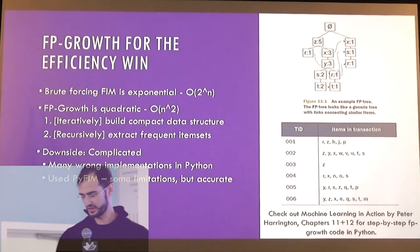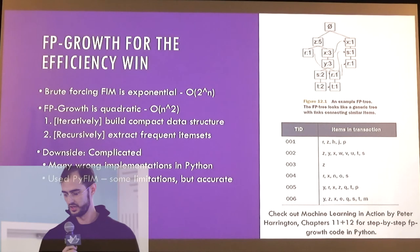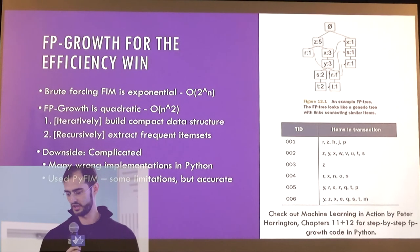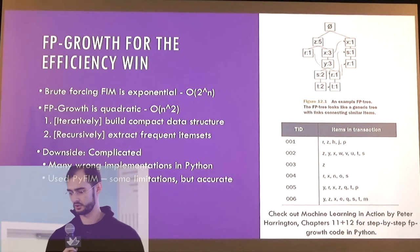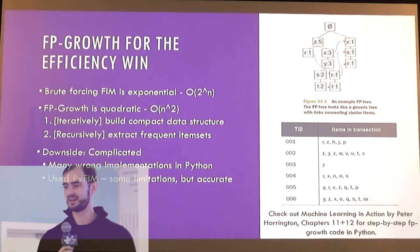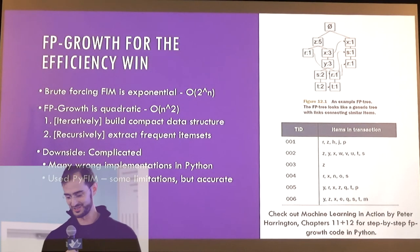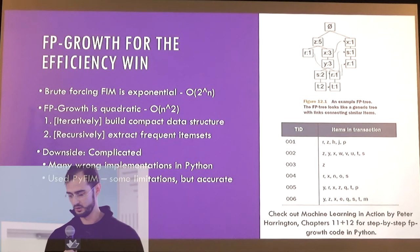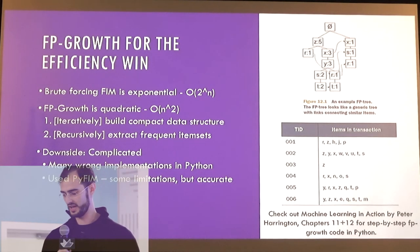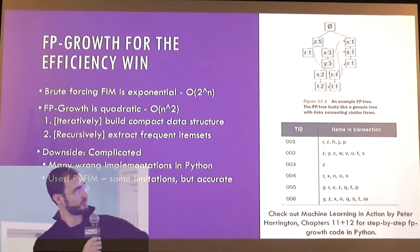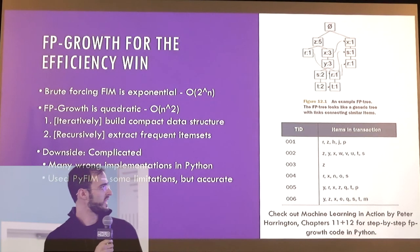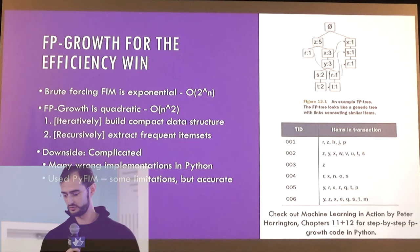Within that, I used a specific algorithm called FP Growth, because frequent item set mining is actually a very complex problem. If you try to brute force it, mathematically it creates a power set that's exponential — I tried that at first before realizing it would crash my computer. So I switched to FP Growth, which is just quadratic. To go through it simply, you iteratively build a compact data structure called an FP tree, and from that you recursively extract your frequent item sets. It's significantly more efficient.